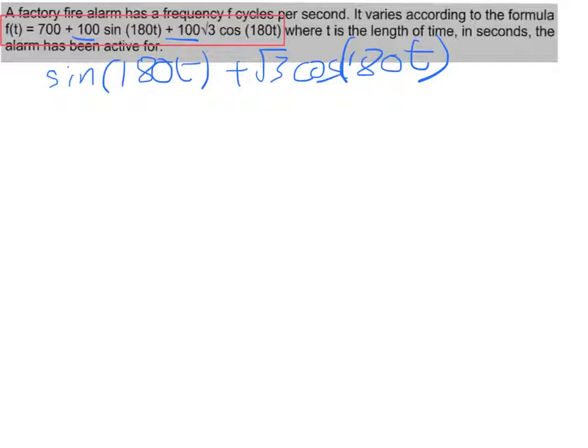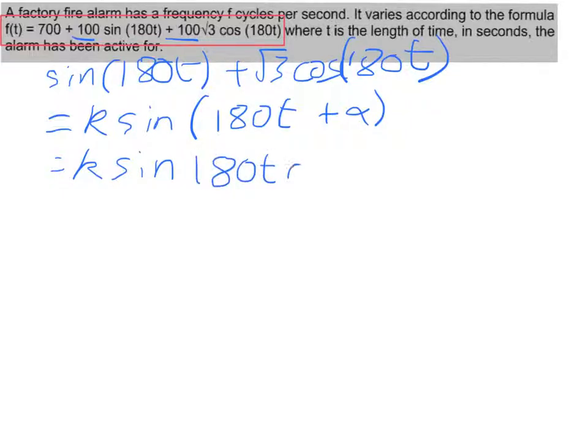Right, so I'm going to try and express this in the form k sine. Now normally we would say x plus alpha, but we're not dealing with x here. We're dealing with 180t. So k sine 180t plus alpha, and I'm going to write that in its expanded form. So you don't need to remember the trig addition expansions, you're given them on your formula sheet. So that will be k sine 180t cos alpha plus k cos 180t sin alpha.